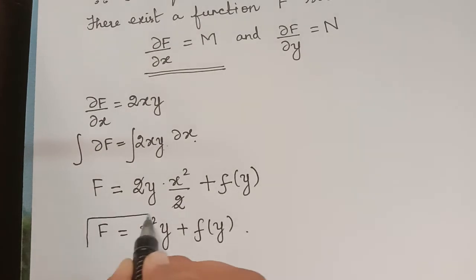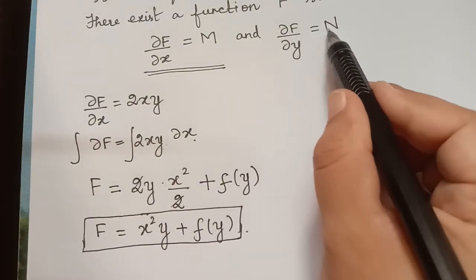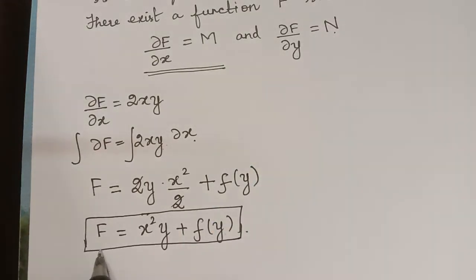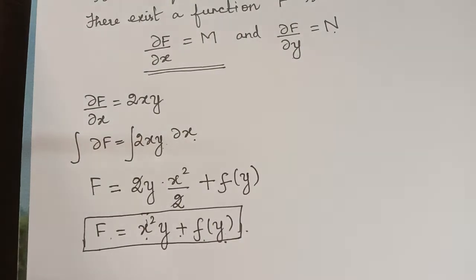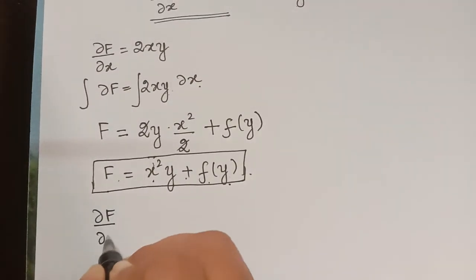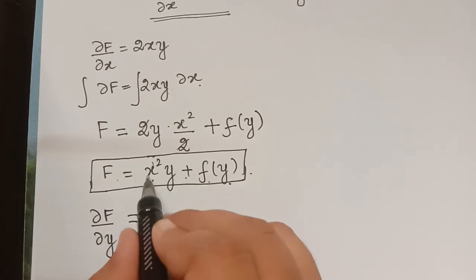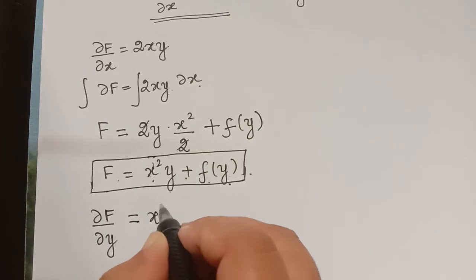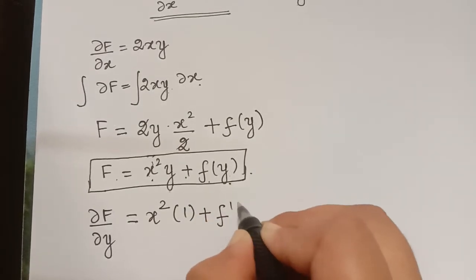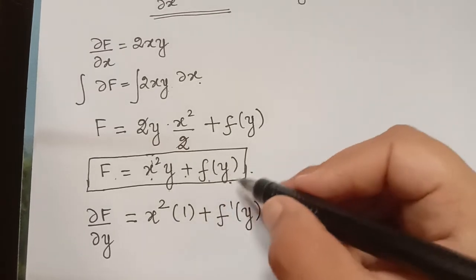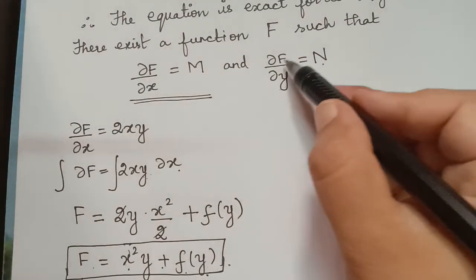Now we need to evaluate f(y) using the condition ∂F/∂y equals N. We differentiate F equals x squared y plus f(y) partially with respect to y. Treating x as constant, ∂F/∂y equals x squared plus f'(y). Substituting this into ∂F/∂y equals N, we get x squared plus f'(y) equals N.